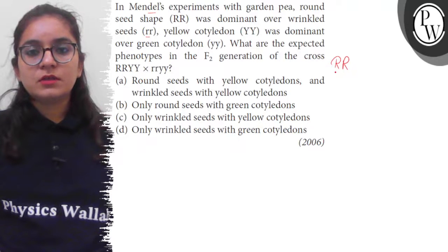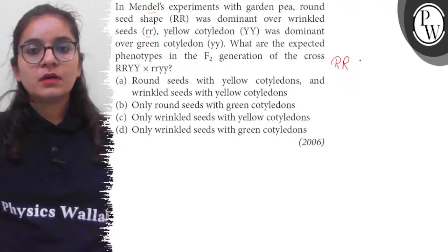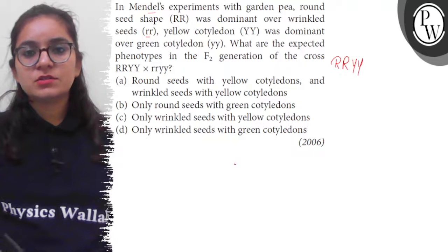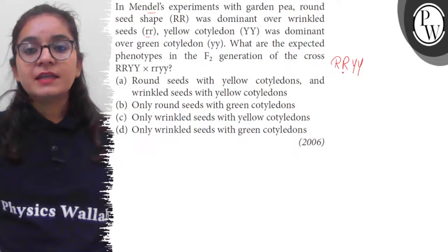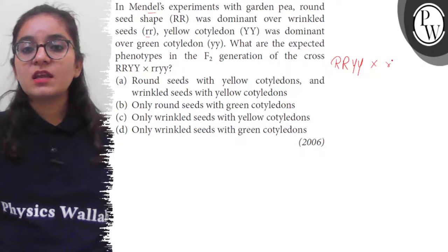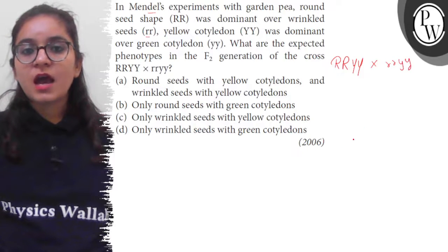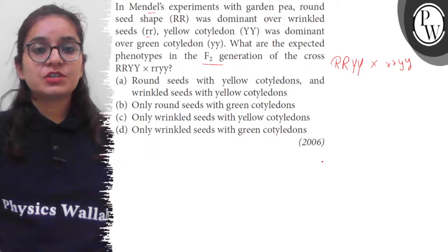So what do we have here? Capital R is round and capital Y is yellow, meaning round and yellow seeds. Round shape and yellow color seeds are crossed with wrinkled shape green color seeds. We need to make F2 generation and then we will read the options.